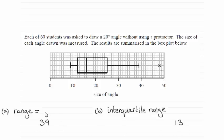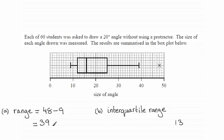To get the range, all you have to do is take the smallest value from the highest value. You can see the highest value is at this outlier here, and from the graph it is 48. So you've got 48 and then all you need to do is subtract the smallest value, which is 9. So 48 minus 9 gives you the range of 39.